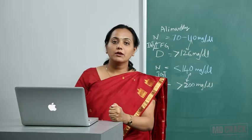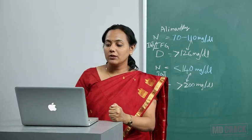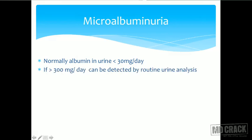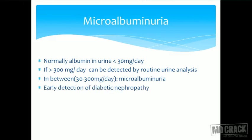The last test is microalbuminuria. Normally, albumin in urine is less than 30 milligrams per day. If excretion exceeds 300 milligrams per day, it is detectable by routine urine analysis and is called proteinuria. Between 30 to 300 milligrams per day, we call it microalbuminuria, which requires a special method for detection. Microalbuminuria is important for the early detection of diabetic nephropathy.